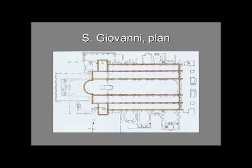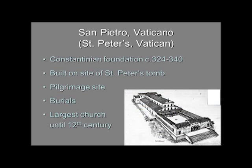The largest of these Constantinian foundations was the church of San Pietro in Vaticano — St. Peter's in the Vatican — erected between 324 and 340, founded by Emperor Constantine I. It was unusual in several respects. For one thing, it was the largest church in Christendom, and it literally remained so until the 12th century, when another church was erected at the monastery at Cluny in France. Then in the 16th and 17th centuries the present church of St. Peter's was built, which is once again the largest church in the world.